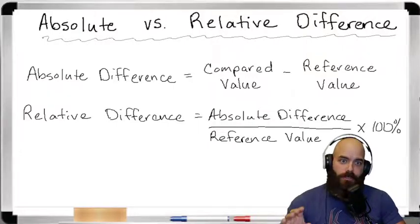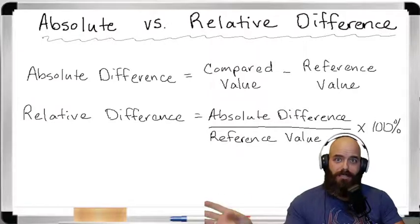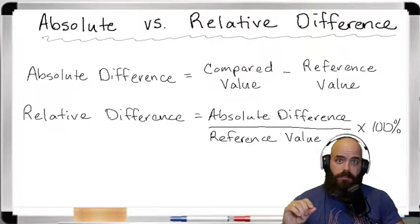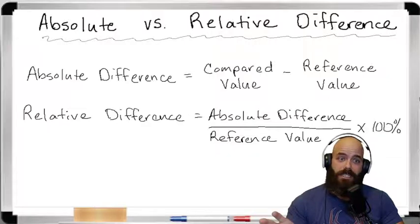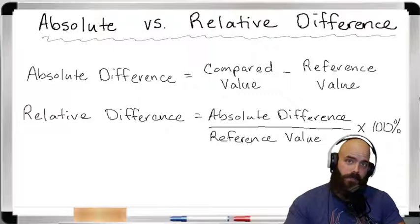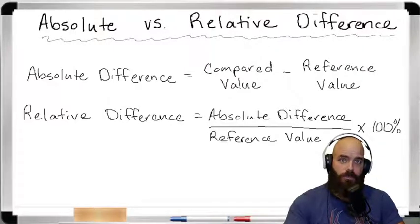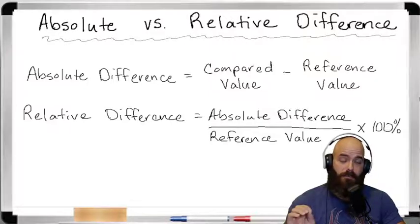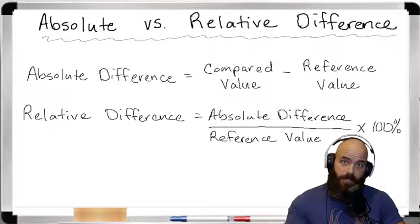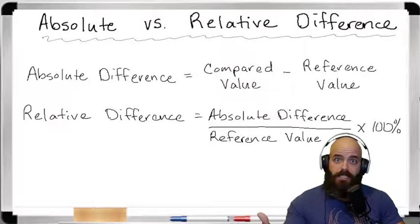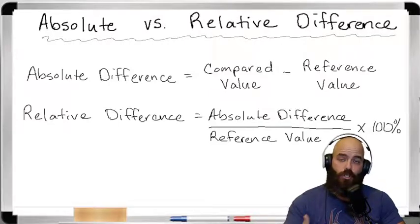Absolute difference is going to be some compared value minus some reference value. The relative difference is simply going to be the absolute difference divided by the reference value times 100%. In other words, the relative difference takes the compared value, subtracts the reference value, divides by the reference value, and then changes that decimal to a percentage so we can interpret it in terms of a percentage.